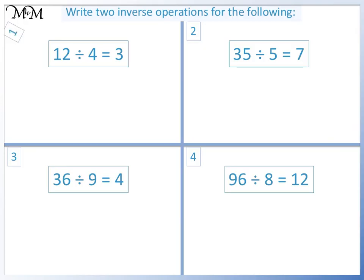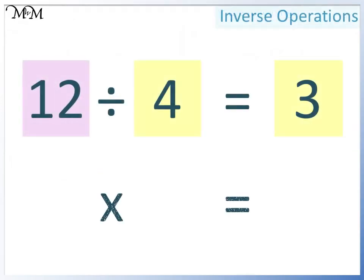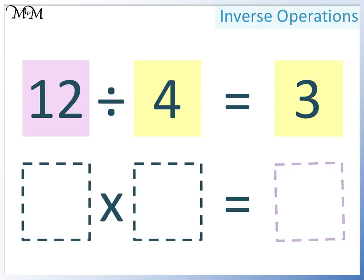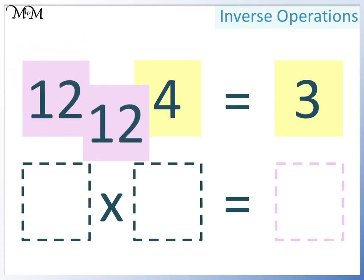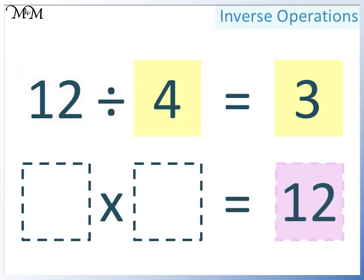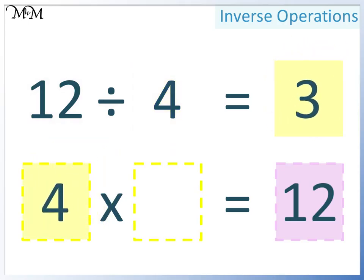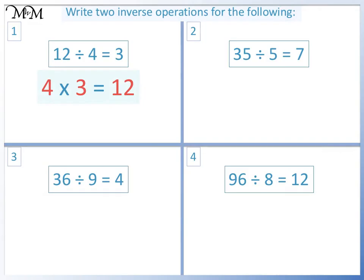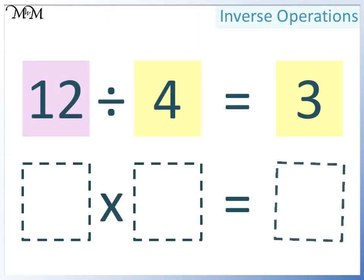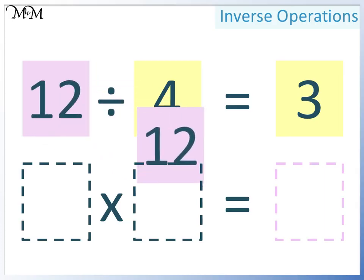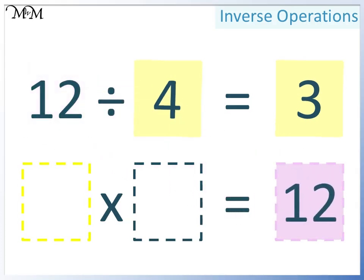Question 1: 12 divided by 4 equals 3. Two smaller numbers multiply together to make a larger number, so 12 must go here. Either of the two smaller numbers can go here — this time we'll have 4. And so 3 must go here. 4 times 3 equals 12.